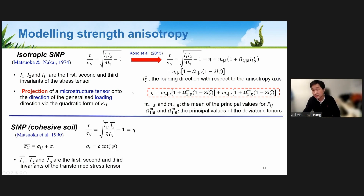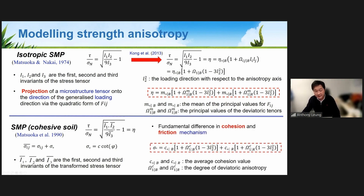However, since rooted soil is cohesive — especially under the extension path — the standard Matsuoka-Nakai criteria for frictional materials without cohesion is insufficient. We therefore expanded the formulation using the Matsuoka 1990s model for cohesive soils, which introduces a transformed stress tensor and an additional bonding stress term to capture cohesion. We then modified this bonding stress to account for root-induced anisotropy. These two new equations describe the root effect on both the isotropic soil microstructure and the anisotropy from the root network for the bonding stress.